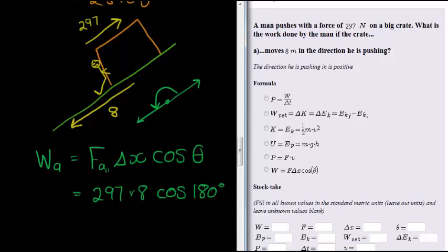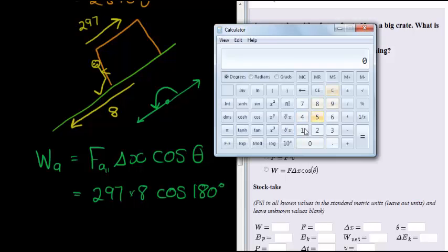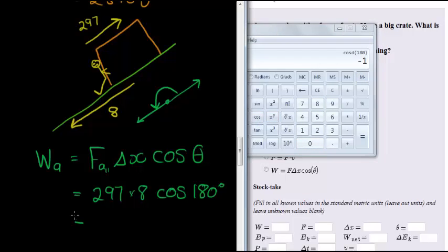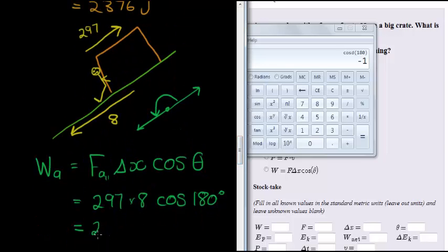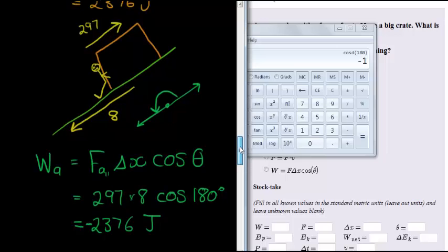And now you'll see something interesting, that 180 degrees cos of that gives me negative 1. That means my final answer will be the same as the previous answer, 2376, because it's the same values, but this time I'm multiplying with negative 1. So it's negative 2,376 joules.